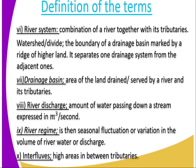We also have the river regime. This is the seasonal fluctuation or variation in the volume of river water or discharge. Then we have the interfluve — these are high areas in between the tributaries.